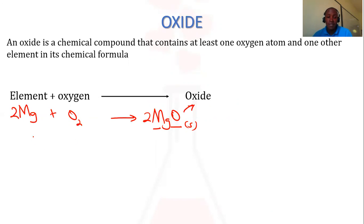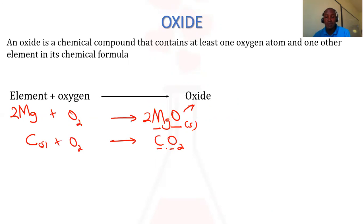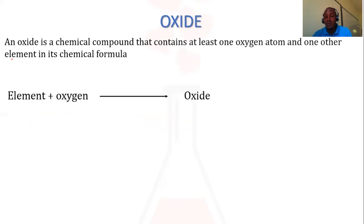If you have a non-metal like carbon reacting with oxygen in excess to form carbon dioxide gas, you have an element of carbon and an element of oxygen. When you put these two together, you will have carbon dioxide. So carbon dioxide will be an oxide of carbon. Basically, an oxide of carbon is a chemical compound which contains at least one oxygen atom and then one other element in its chemical formula.